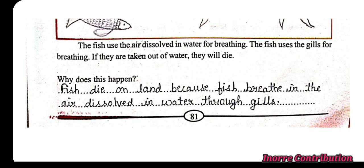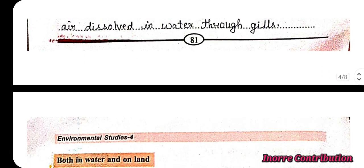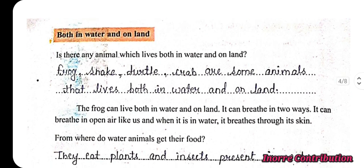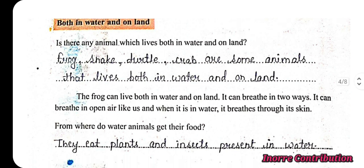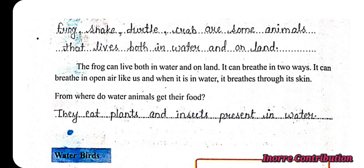Why does this happen? Fish die on land because they breathe the air dissolved in water through gills. Is there any animal which lives both in water and on land? Yes — frog, snake, turtle, and crab are some animals that live both in water and on land. The frog can breathe in two ways: in open air like us, and when it is in water, it breathes through its skin.